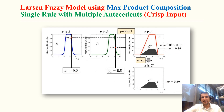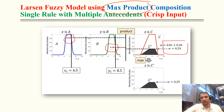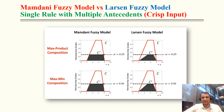For single rule with multiple antecedents, crisp input, using max-product: X = 6.5 gives degree of compatibility 0.81, and for Y the degree of compatibility is 0.36. Multiplying: 0.81 × 0.36 = 0.29. We scale down the output by 0.29, giving the final output.